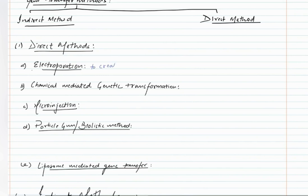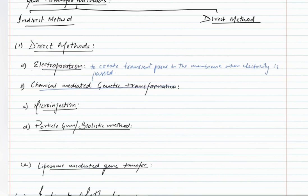Pores are created in the membrane when electricity is passed. These transient pores will allow the recombinant DNA to enter the cell, and then these pores will close up. Next is chemical mediated genetic transformation.